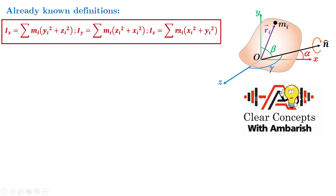What do we know already? The definition of IX: when talking about moment of inertia about the X axis, you take the perpendicular distance of every point from the X axis, square that distance, and multiply by the mass of every particle. So IX = Σ mᵢ(yᵢ² + zᵢ²), where yᵢ and zᵢ are the Y and Z coordinates of the ith particle. Similarly, IY = Σ mᵢ(zᵢ² + xᵢ²) and IZ = Σ mᵢ(xᵢ² + yᵢ²).